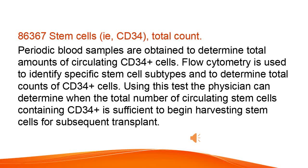Stem cells, i.e., CD34, total count. Periodic blood samples are obtained to determine total amounts of circulating CD34 plus cells. Flow cytometry is used to identify specific stem cell subtypes and to determine total counts of CD34 plus cells. Using this test the physician can determine when the total number of circulating stem cells containing CD34 plus is sufficient to begin harvesting stem cells for subsequent transplant.